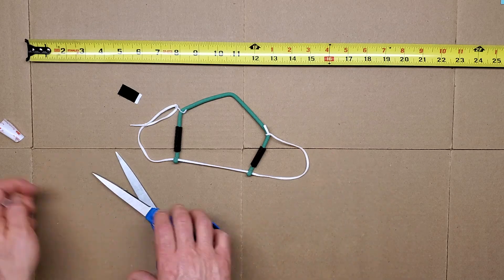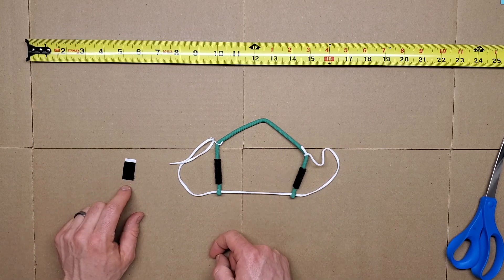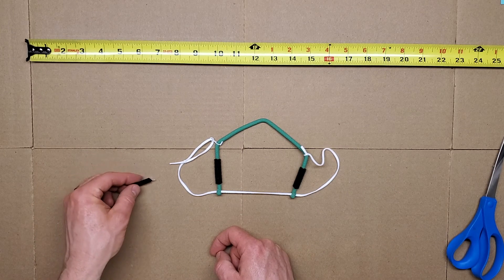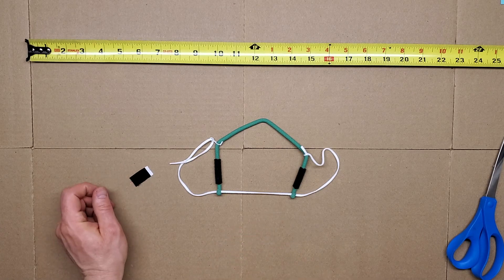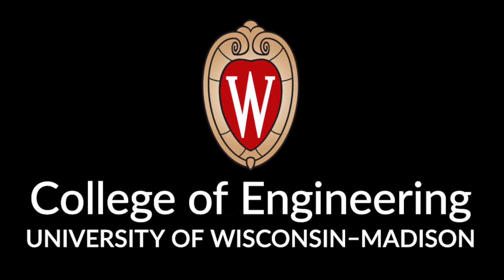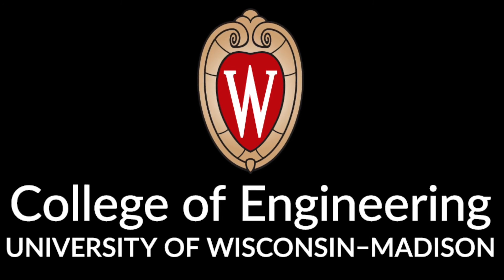Now we're going to take these two items, the fitter and the Velcro tab, to a mirror to try on.